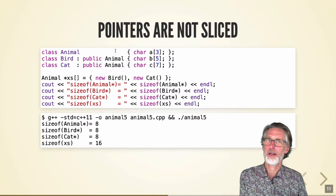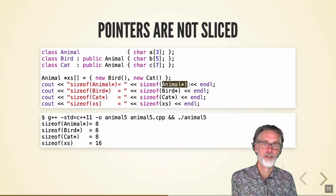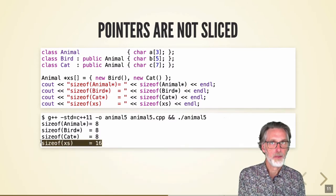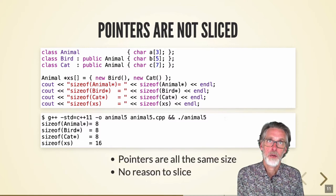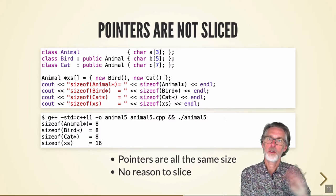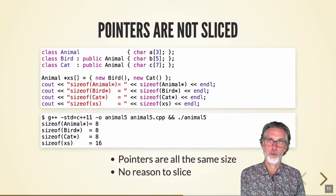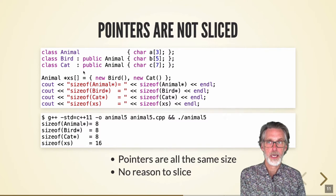We can't take the size of a reference because it's not a real thing, but we can take the size of a pointer. The animal pointer, the bird pointer, and the cat pointer are all the same size. When we look at an array of pointers, there's no problem holding on to the bird and cat pointers, and therefore no reason to slice the object. The objects are unmolested in memory and we're just copying pointers from one place to another.